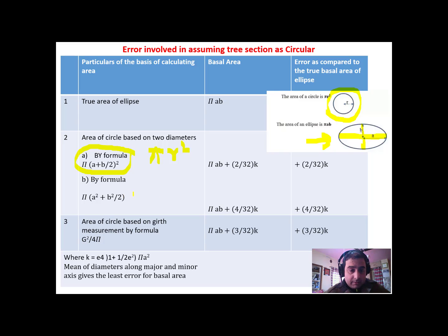Now, there is another method where we have diameter one, in which we use the diameter to calculate the basal area, and we have diameter two. We use that diameter as well to get the second basal area. Then we average the two basal areas using this second formula.